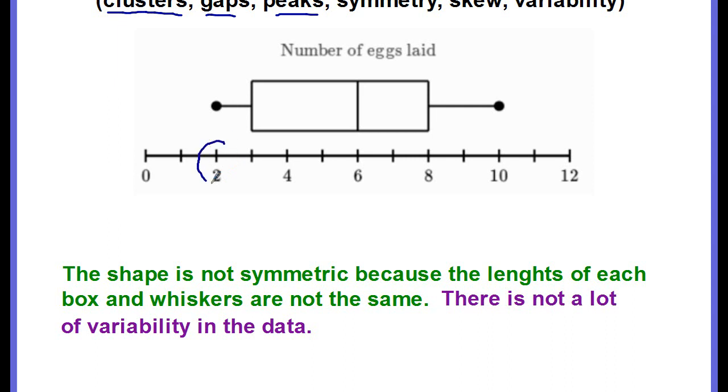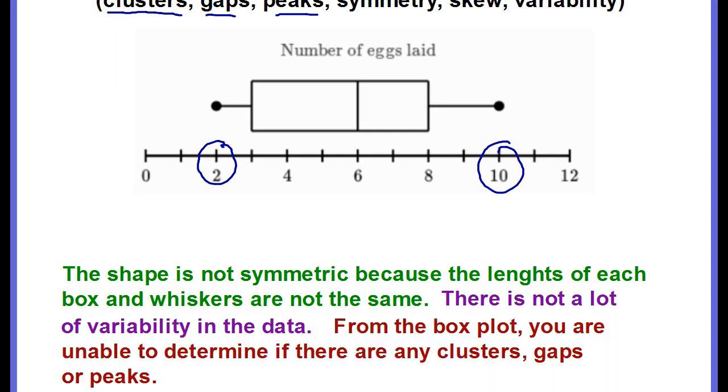There's not a lot of variability in the data. You could tell that it only goes from 2 to 10, so that's a very small range. And from the box plot, you're unable to determine if there are any clusters, gaps, or peaks.